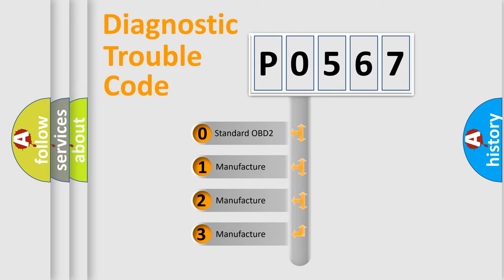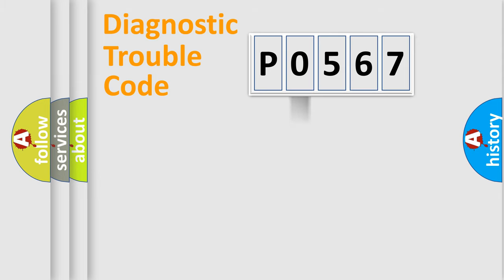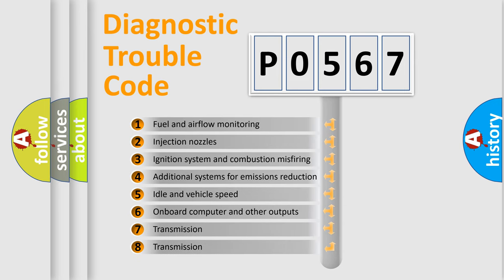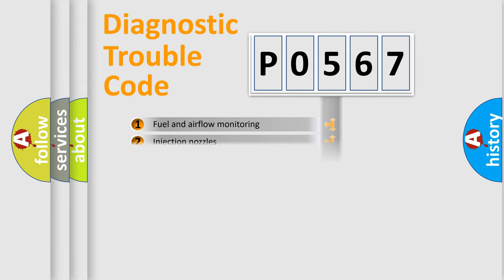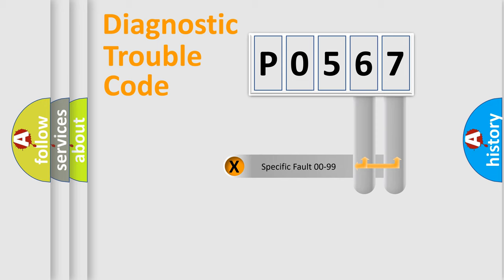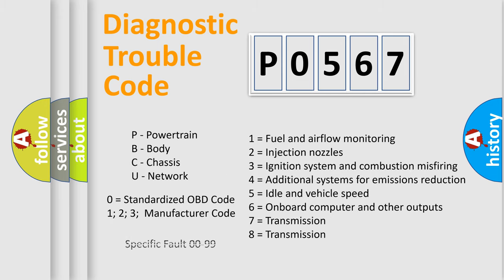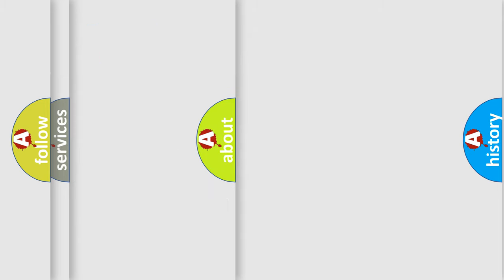If the second character is expressed as zero, it is a standardized error. In the case of numbers 1, 2, or 3, it is a more manufacturer-specific expression of a car-specific error. The third character specifies a subset of errors. This distribution is valid only for the standardized DTC code. Only the last two characters define the specific fault of the group, and this is valid only if the second character is expressed by the number zero.